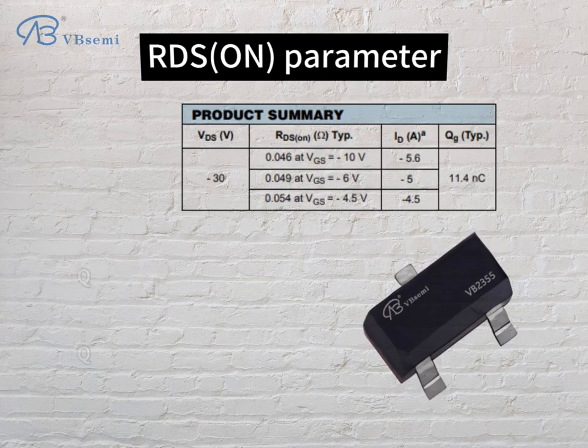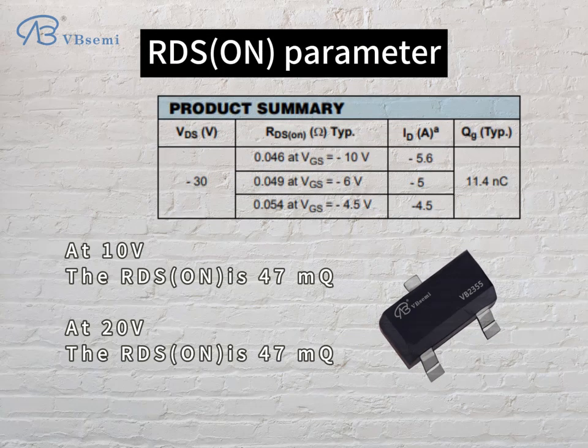RDS(on) parameter: At -10V, the RDS(on) is 47mΩ. At -20V, the RDS(on) is also 47mΩ.